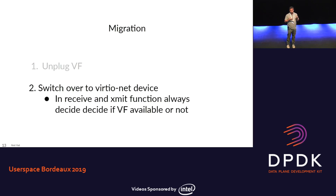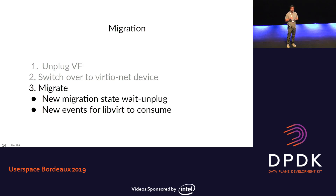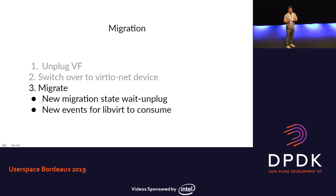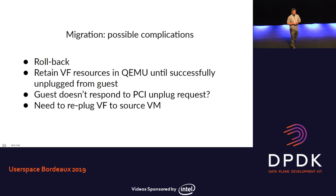The paravirtualized device is emulated in software, so it can be easily migrated — that's been working for a very long time. You start the actual migration and need new migration states so management applications know what's going on. At the moment there are states like: migration is set up, migration is active, migration is finished. You need something that says 'I'm waiting for unplug from the guest operating system,' plus new events to tell libvirt what device was unplugged and that it was unplugged in a special way. Then on the target system we need to replug the device automatically. There are a lot of complications and things that can go wrong.